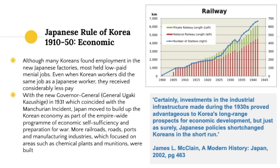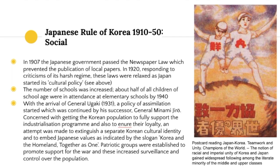In 1931 under Governor General Ugaki Kazushige, Japan moved to build the Korean economy as part of an empire-wide program of economic self-sufficiency — a move toward autarky. Railroads, roads, ports, manufacturing industries, and infrastructure were developed in Korea, benefiting all people regardless of nationality. As one source notes, this proved advantageous to Korea's long-range prospects for economic development, but Japanese policies shortchanged Koreans in the short run.